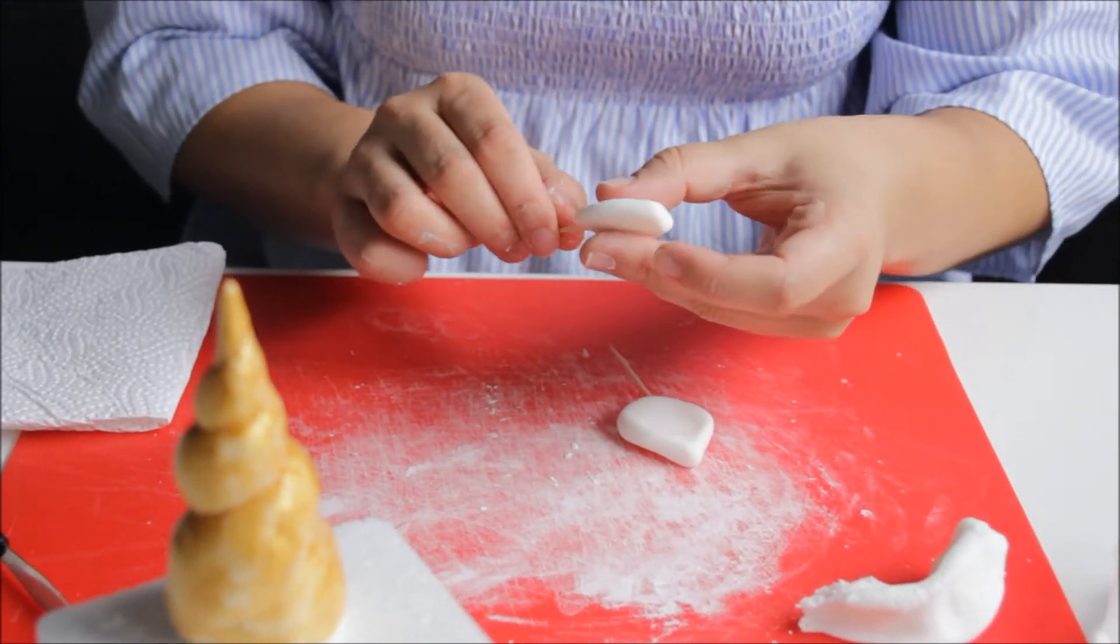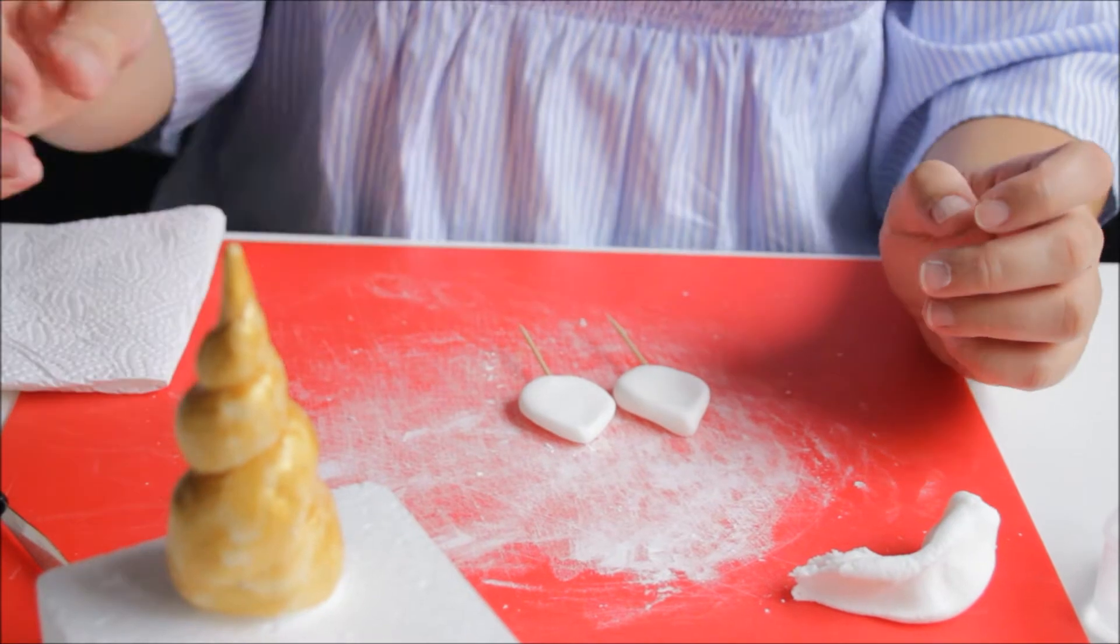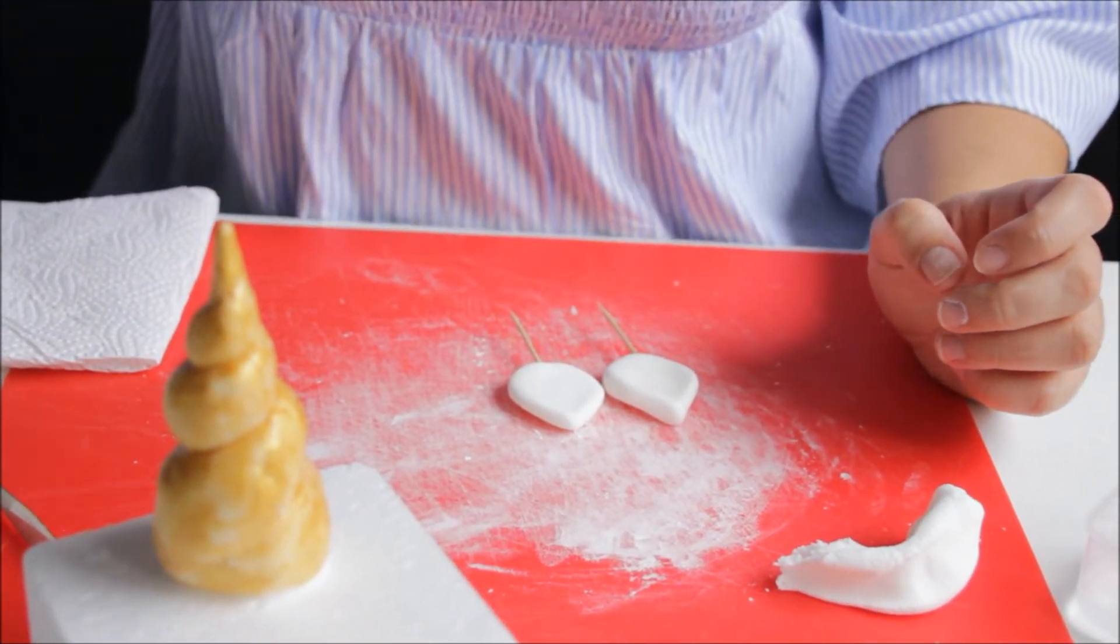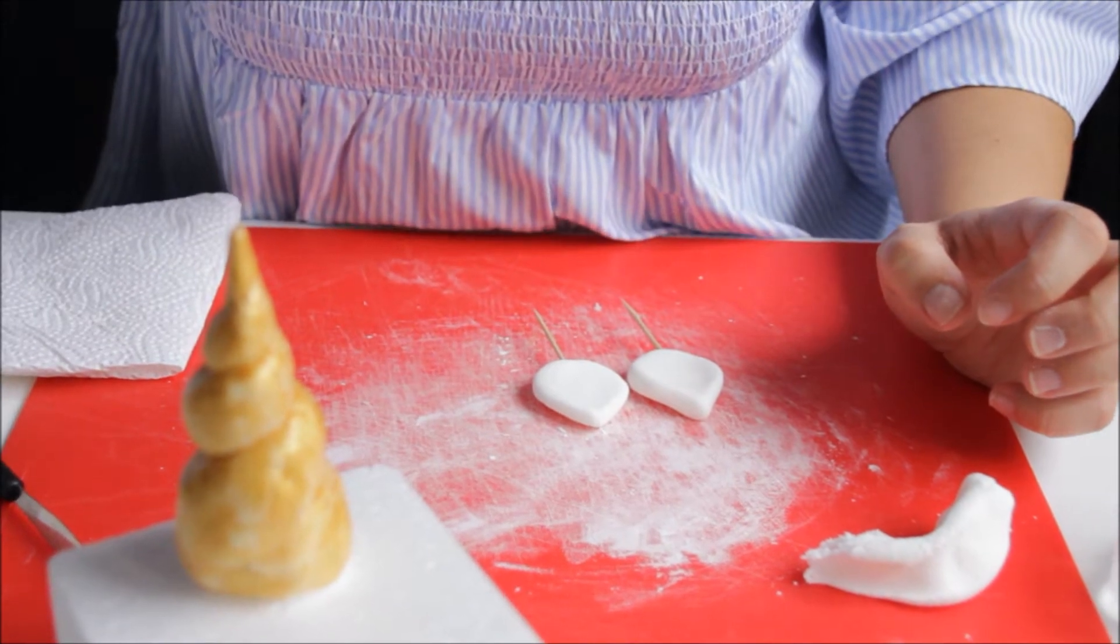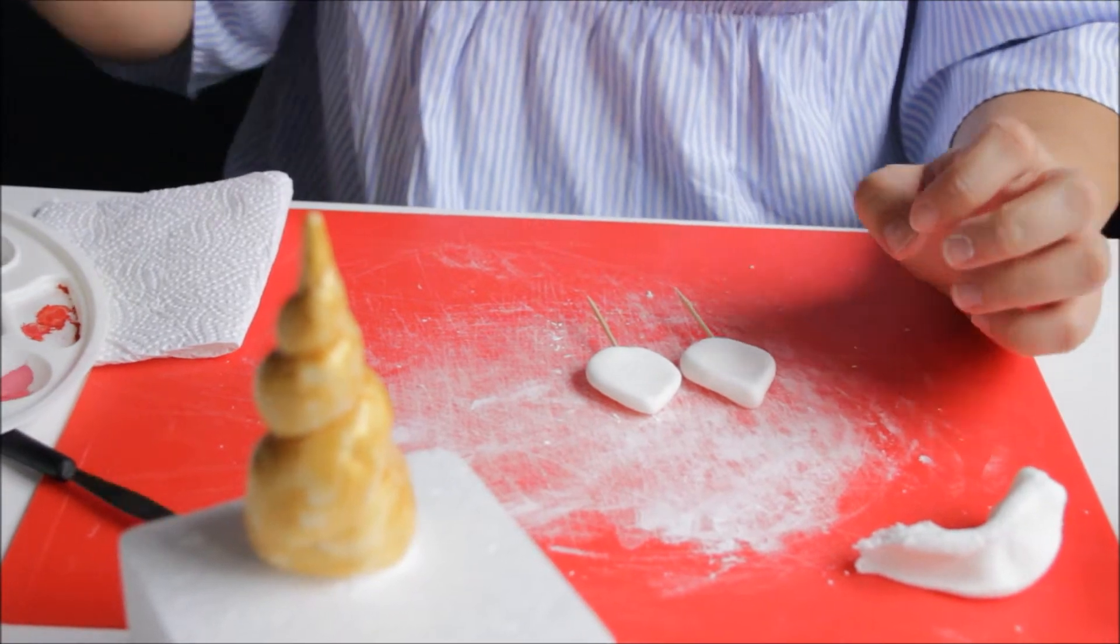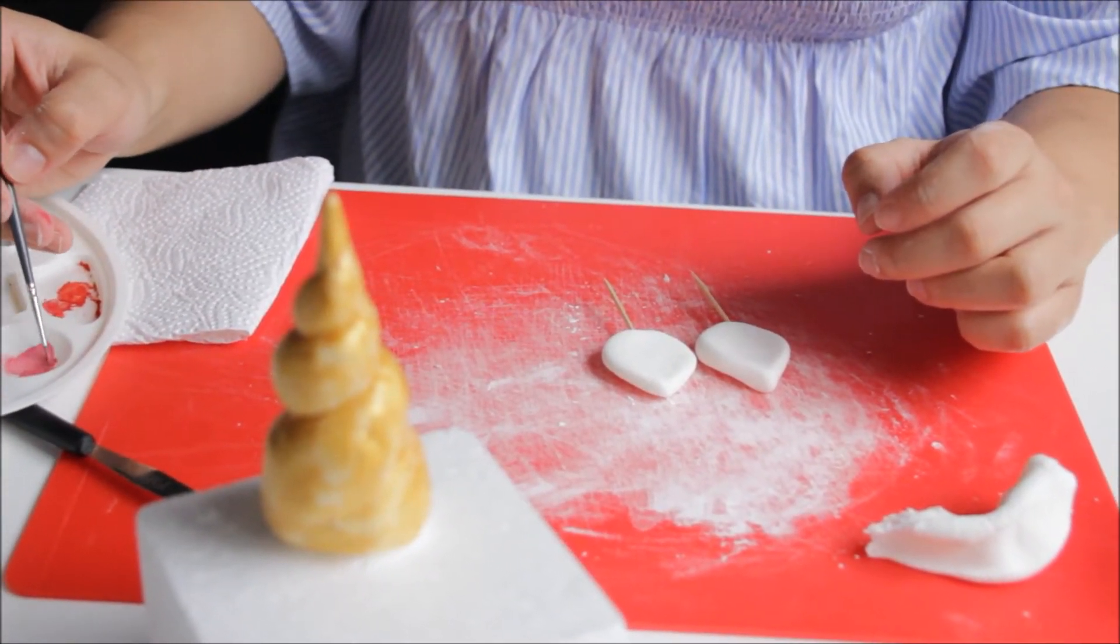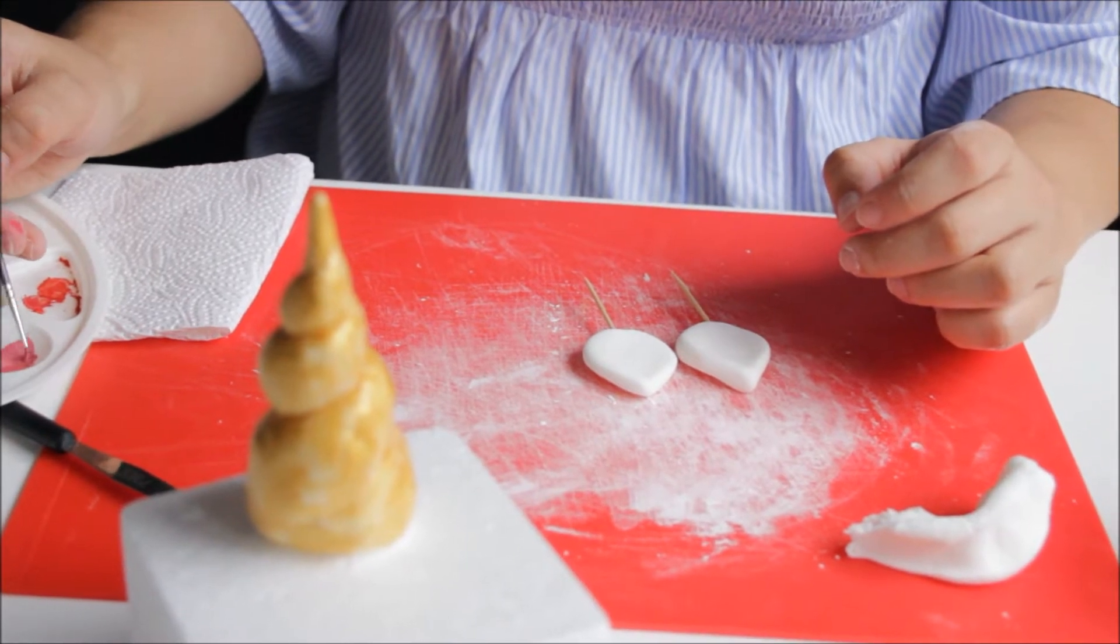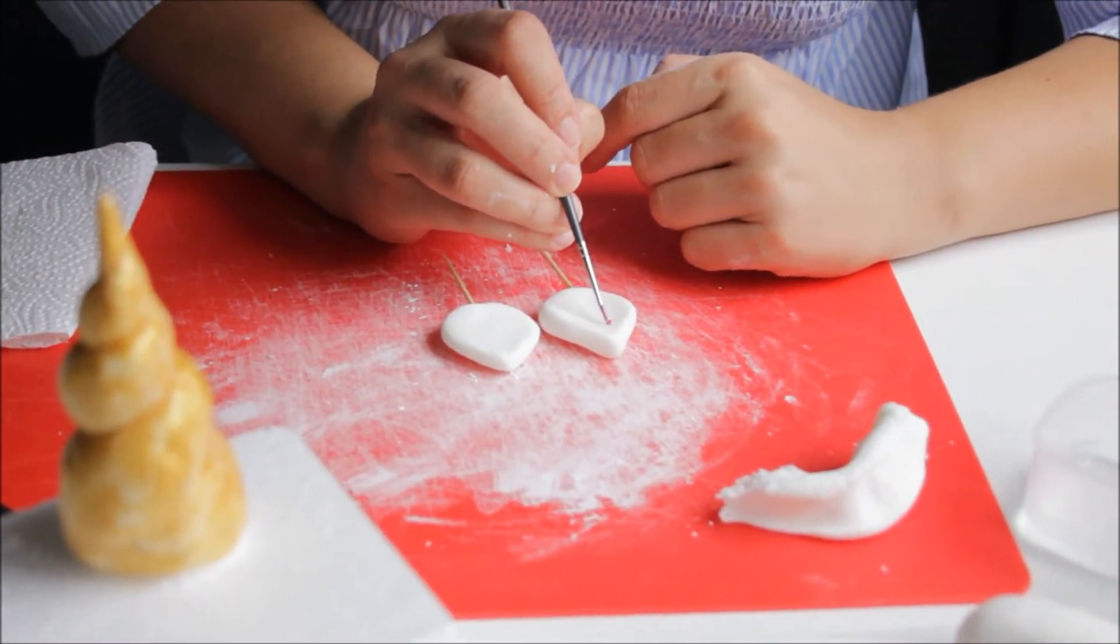And last time I was making this unicorn cake, I made the pink part from pink fondant. But today I'm being lazy, so I'm going to just paint that pink part. So I'll take some pink paint with some water, and then I'm going to paint this.